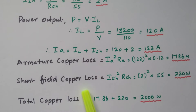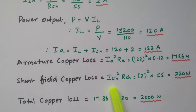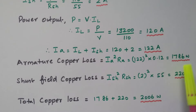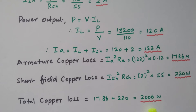Shunt field copper loss = Ish² × Rsh. Ish is 2 amperes, so 2² × 55 = 220 watts. So this is the shunt field copper loss. Total copper loss = 1,786 + 220 = 2,006 watts.